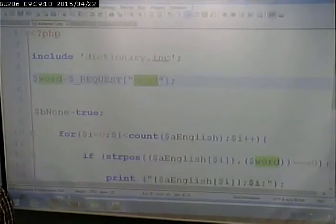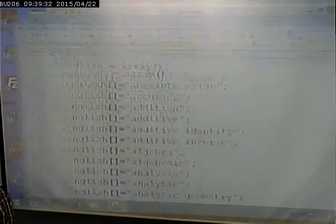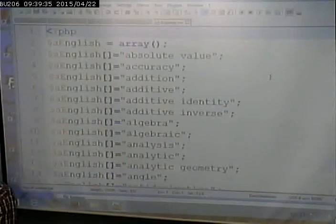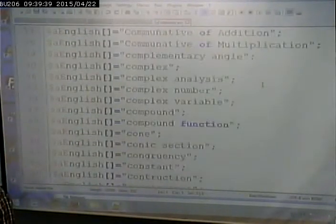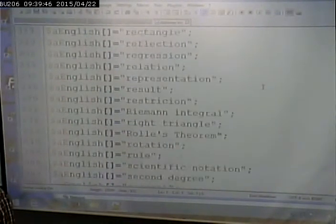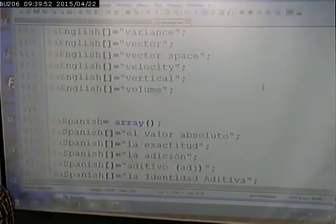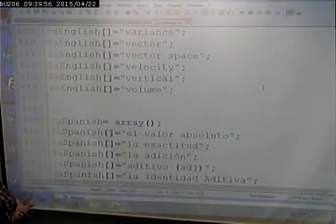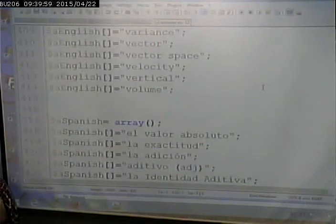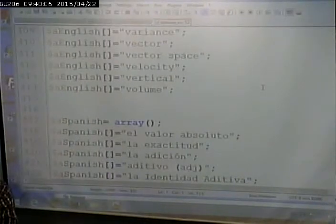First of all, we have include dictionary dot inc. And what do you suppose dictionary dot inc is? Yeah. In our case, it's not a full-blown database, but it's an array. An array of all the different English terms and an array of the corresponding Spanish term. I actually created this by exporting some data from a website and put it in Excel and played around with it so I didn't have to type all this in. There's no way I'd type in 414 terms two times, once in English, once in Spanish.